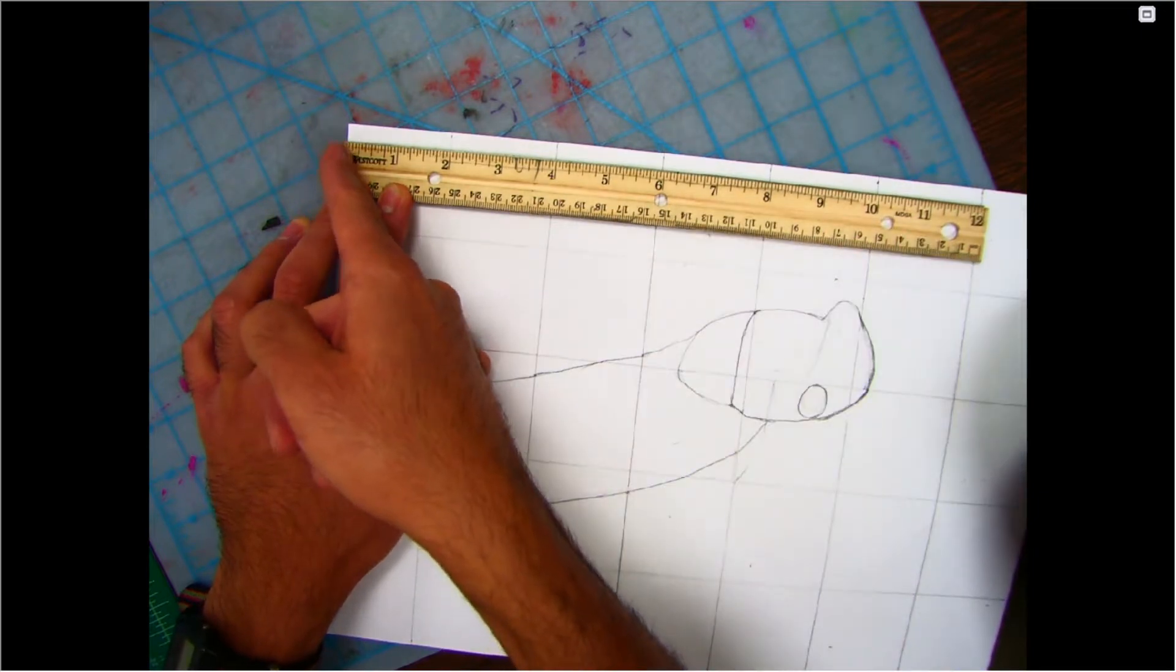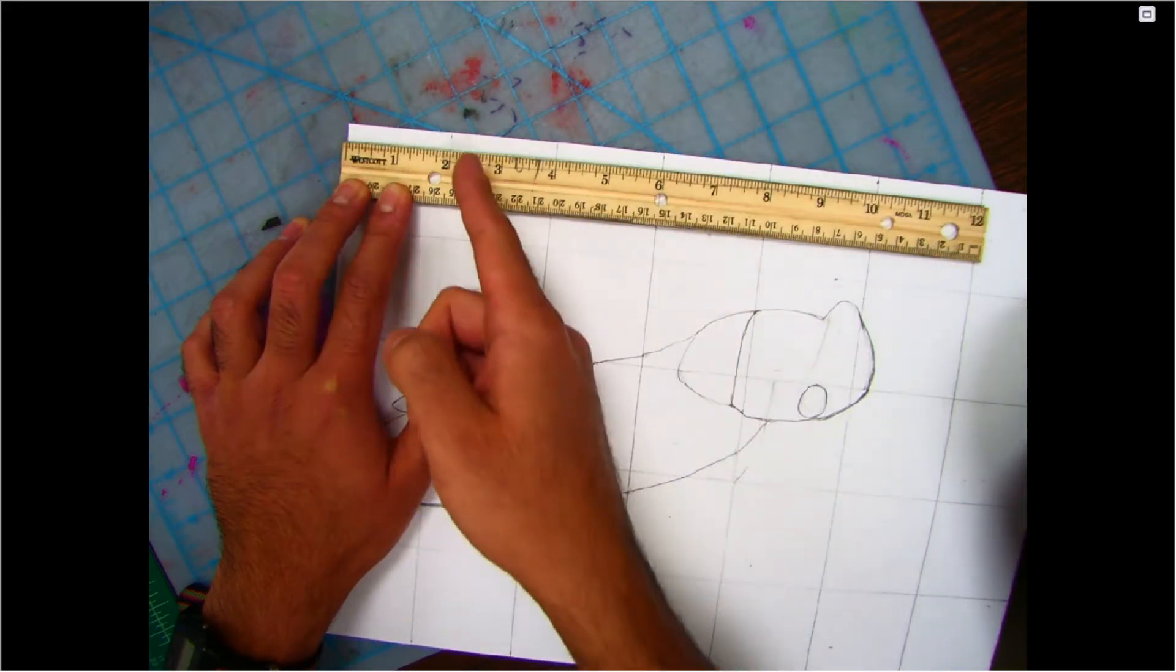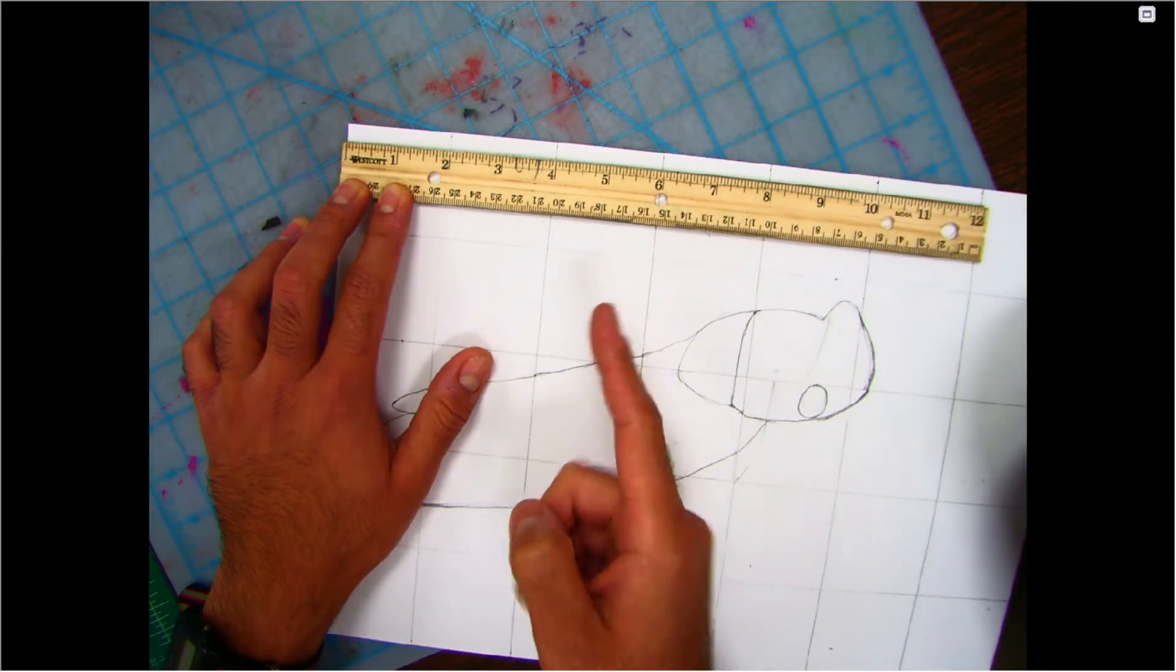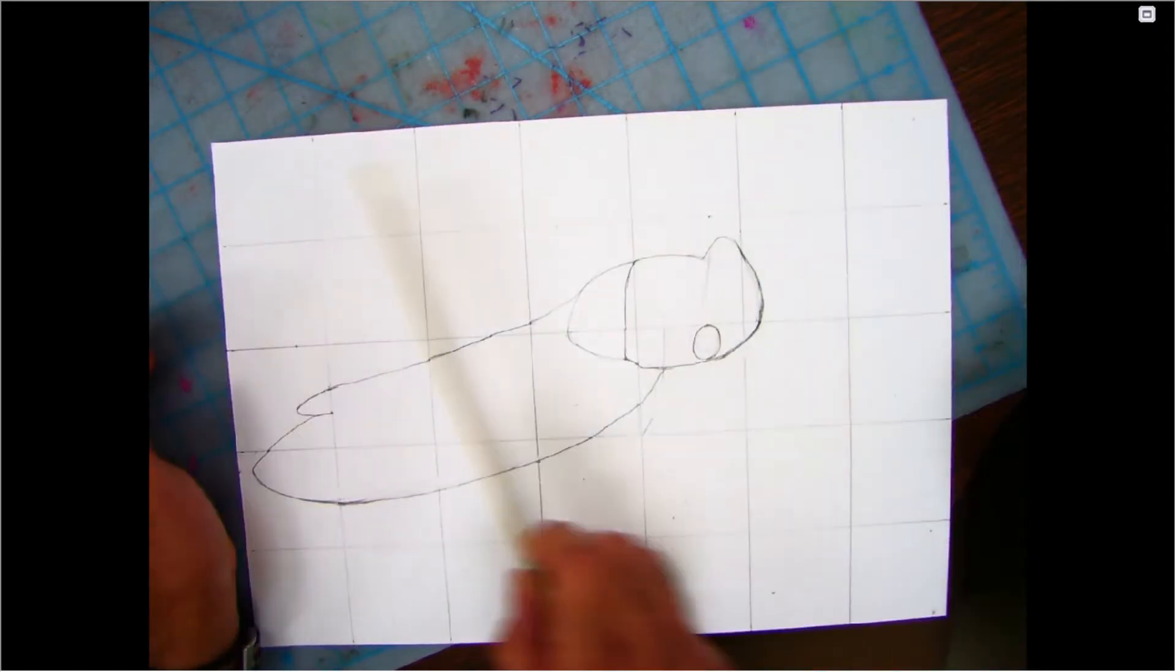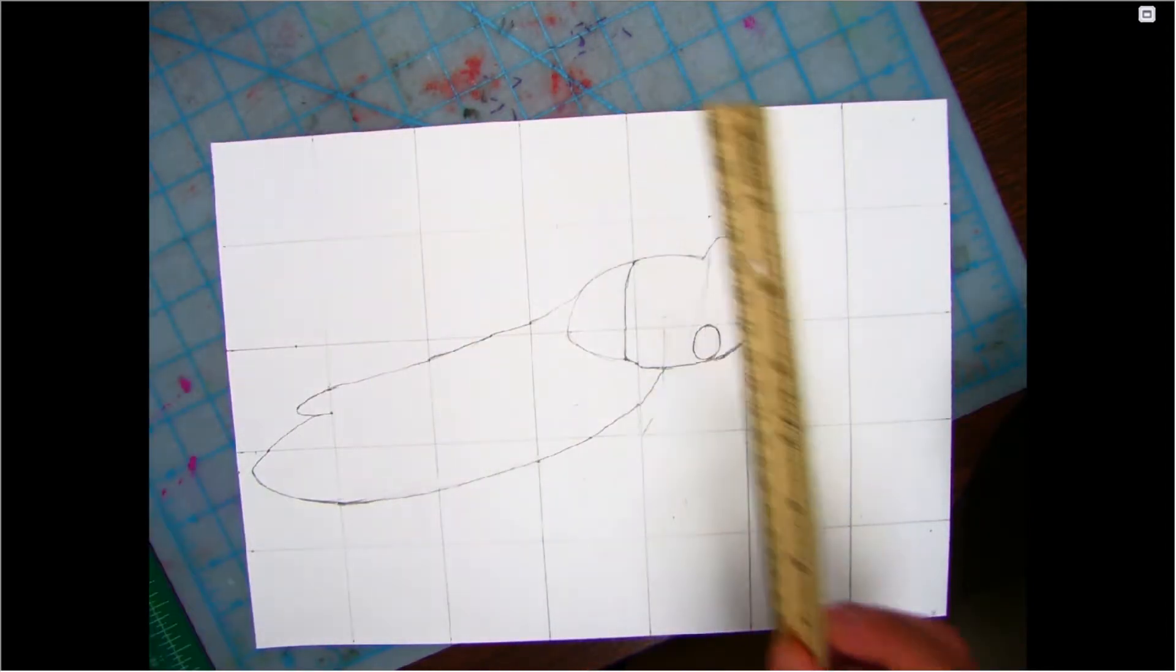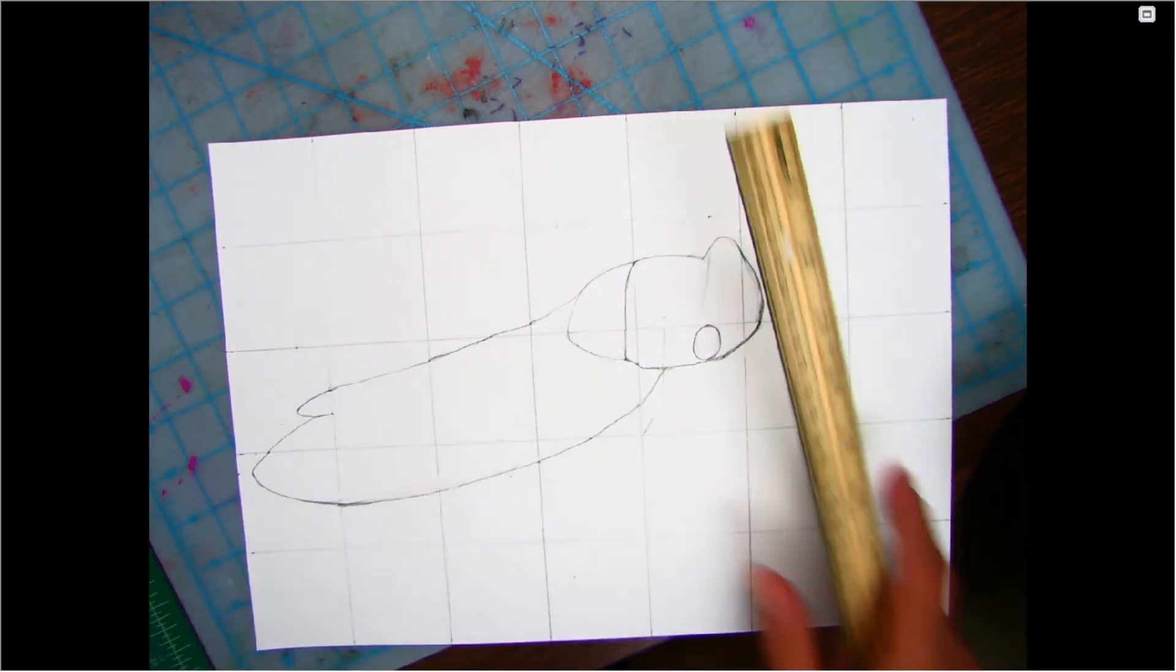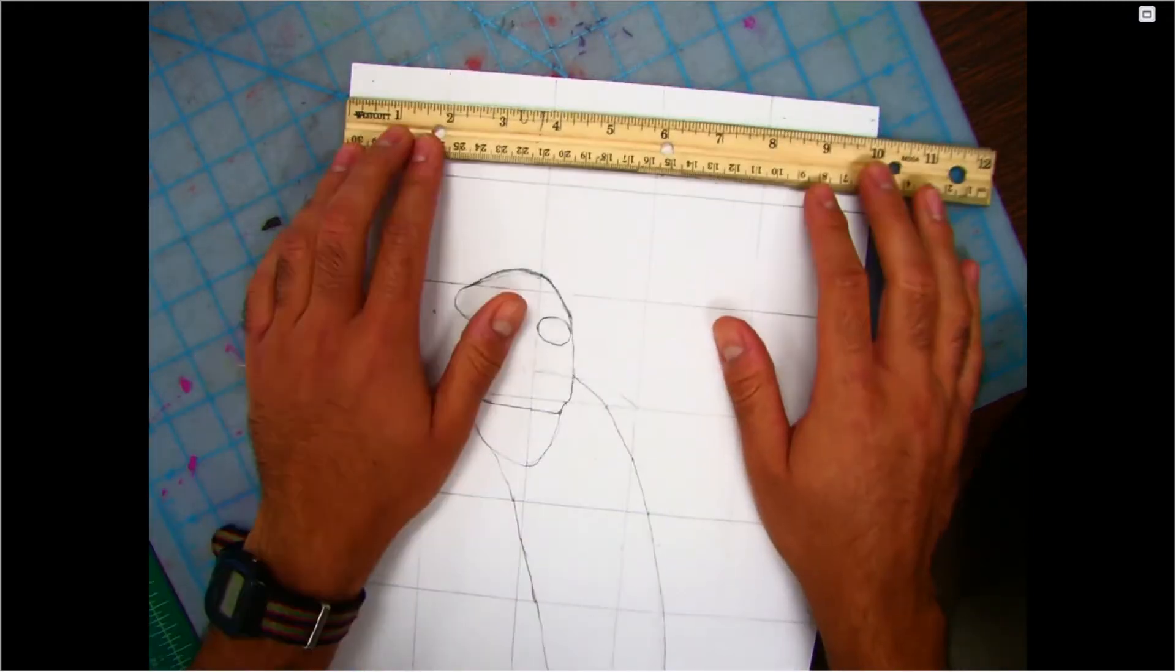You see how that white part of the paper is lined up to this black notch. We started there. Every two inches: boom, boom, boom, boom, boom. So all the way to 12, it gives us seven squares, which correlate to these seven squares on your image. Then we do the same thing for the short side, except it's 10 inches long.